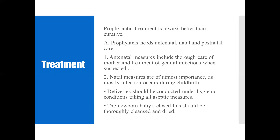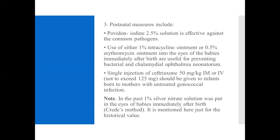The newborn baby's eyelids should be thoroughly cleansed and dried. Postnatal measures include: use of povidone-iodine 2.5% solution, which is effective against common pathogens. Use of either 1% tetracycline ointment or 0.5% erythromycin ointment into the eyes of babies immediately after birth is useful for preventing bacterial and chlamydial ophthalmia neonatorum. A single injection of ceftriaxone 50 mg/kg IM or IV, not to exceed 125 mg, should be given to infants born to mothers with untreated gonococcal infection. In the past, 1% silver nitrate solution — the Credé method — was used, but this is only of historical value and is no longer practiced.